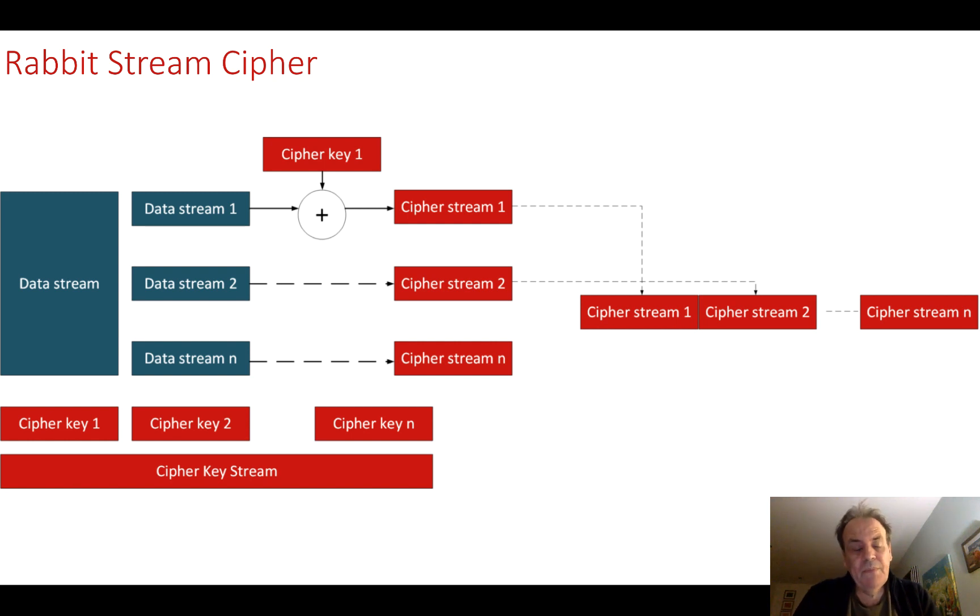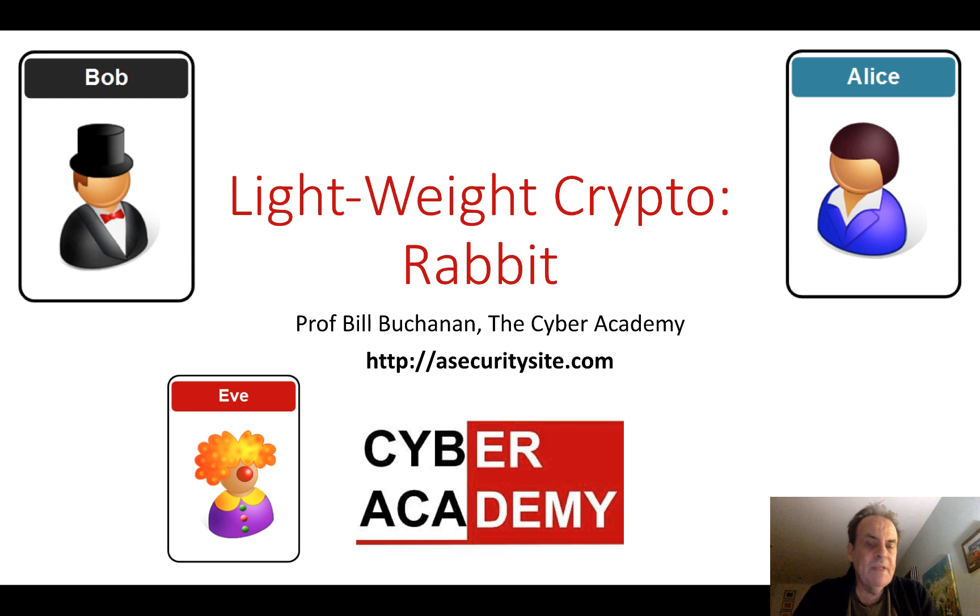That's been the lightweight crypto method of Rabbit. I hope it's explained a little bit about what a block cipher looks like and what a stream cipher looks like, and why we would use a stream cipher. Thank you.